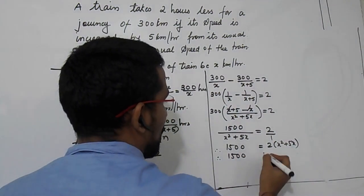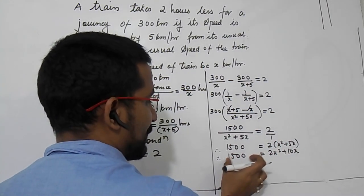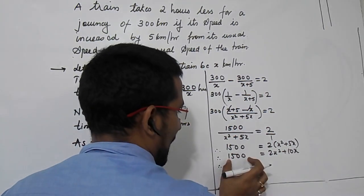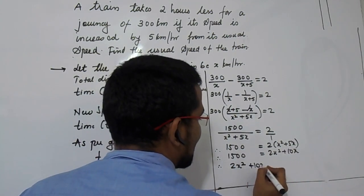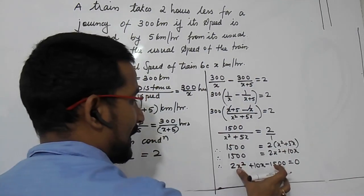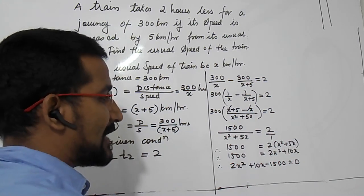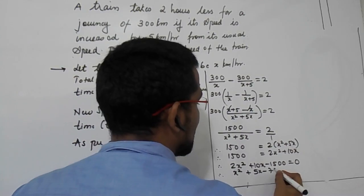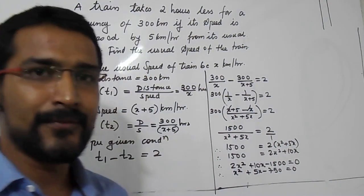Expanding gives 1500 equals 2x squared plus 10x. Shifting 1500 to the other side: 2x squared plus 10x minus 1500 equals 0. Since 2 is common to all terms, divide the whole equation by 2 to get the simplified form: x squared plus 5x minus 750 equals 0.